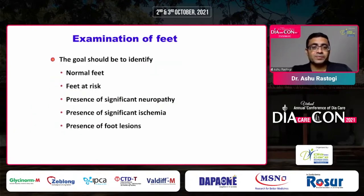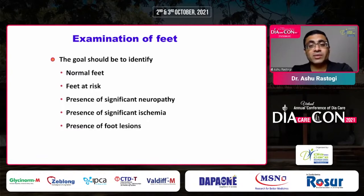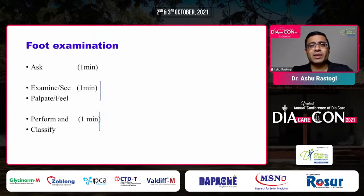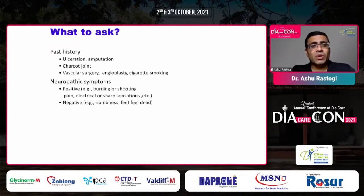Always examine the foot whenever the patient first comes to you. The simple goal should be to identify a normal foot from an abnormal one. A foot at risk is one where diabetic neuropathy is present; a patient with vascular complications, ischemia, or foot lesions is also at risk. Just spend three minutes: ask, examine, palpate, and classify. This simple three-minute examination is very useful for prevention of foot abnormalities.